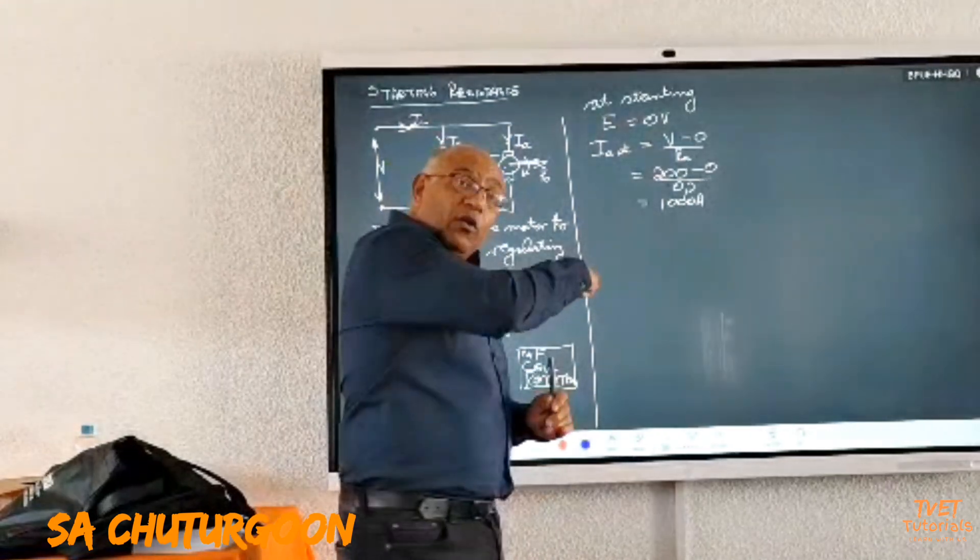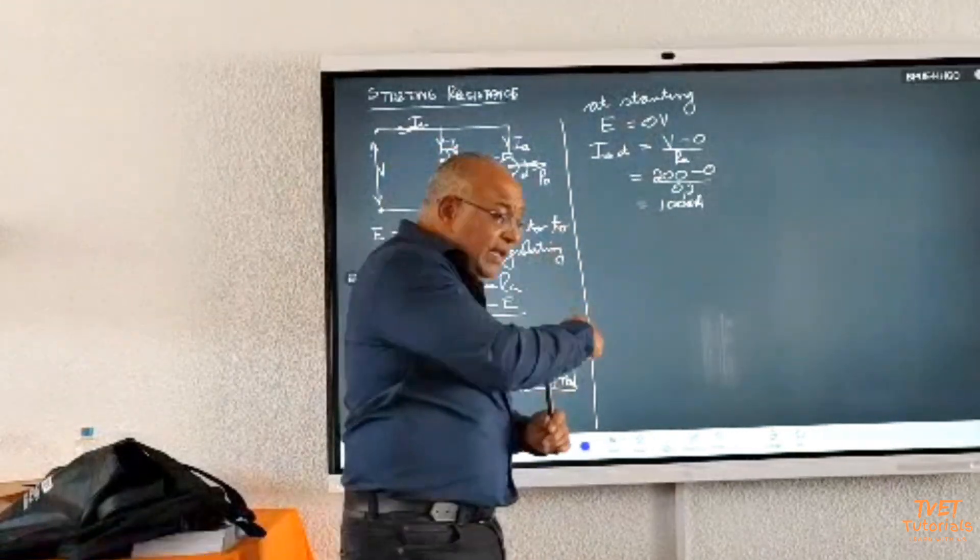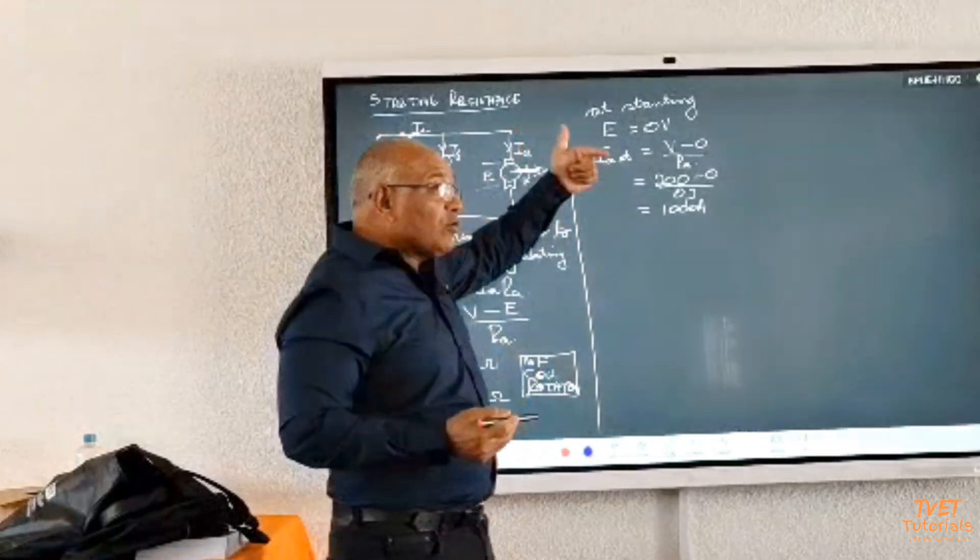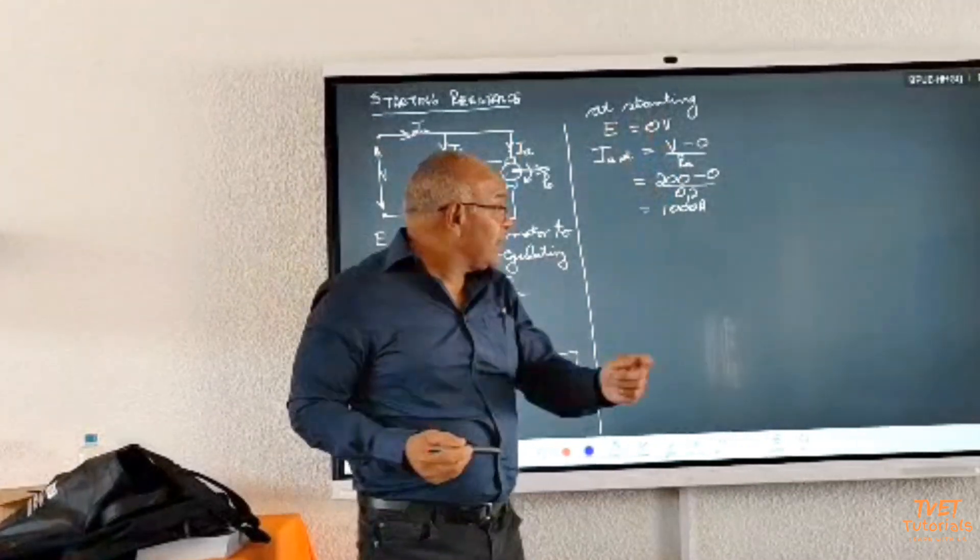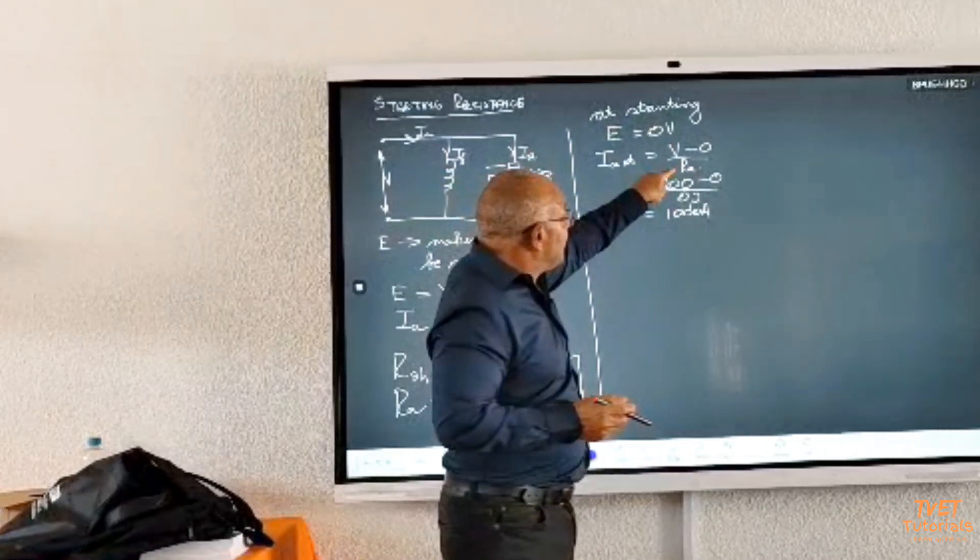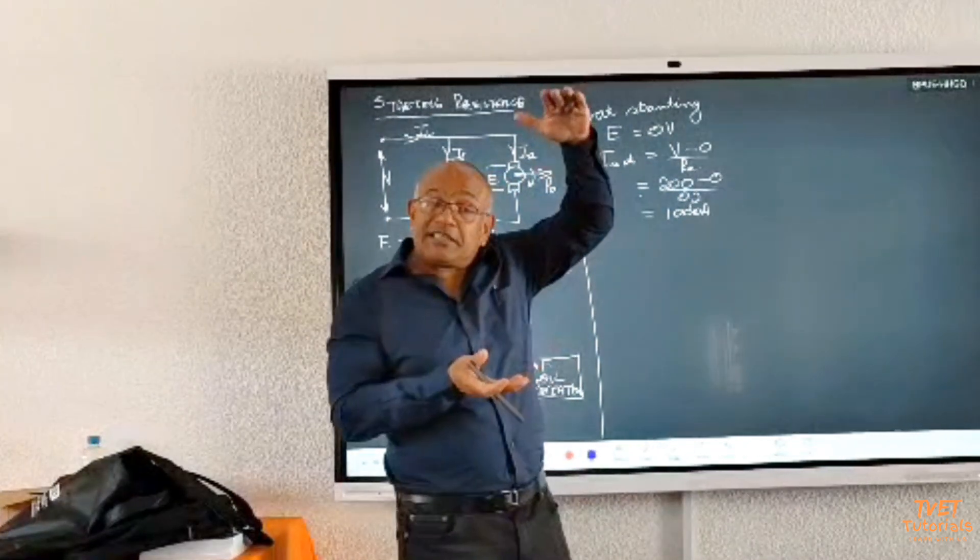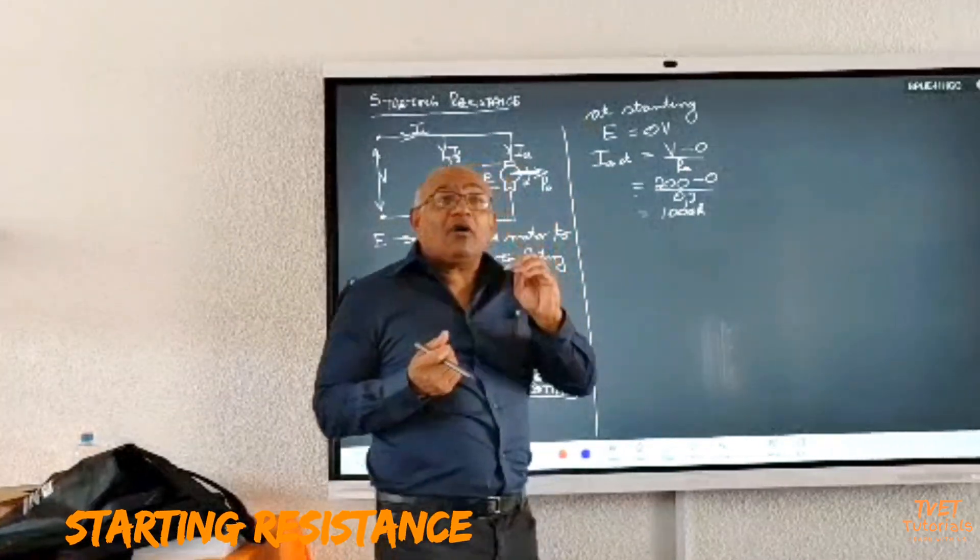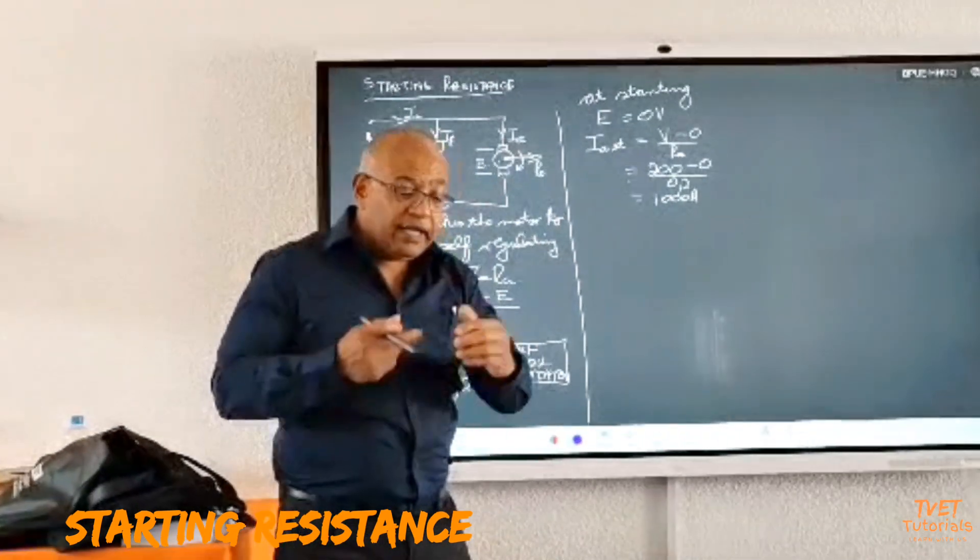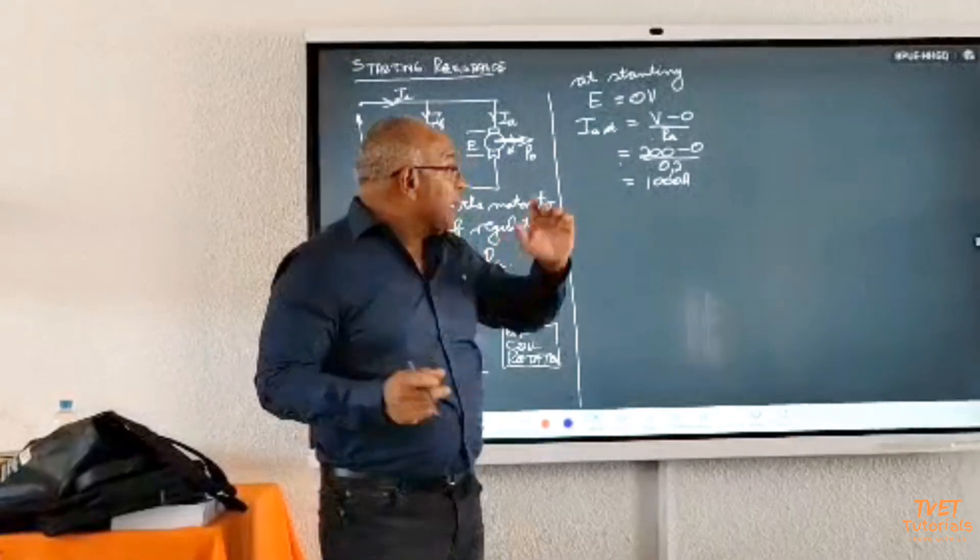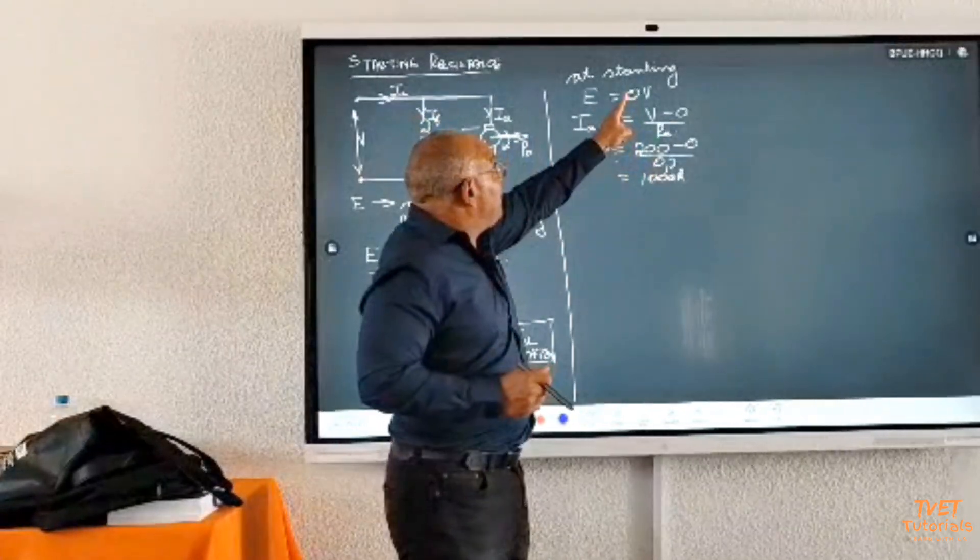We take the spring-loaded starting arm from the off position and bring it to position number one. Current then flows through all the elements, flows through the armature and goes back. What have we done? We have increased the value of the resistance of the armature. What happens to the current? It decreases. Because the current is very small, the motor just begins to rotate.